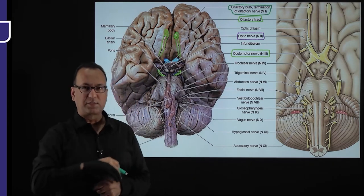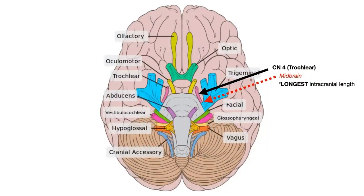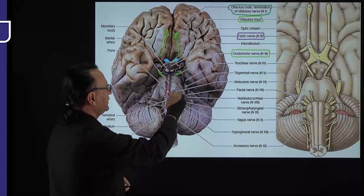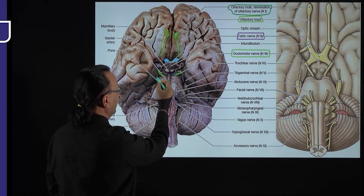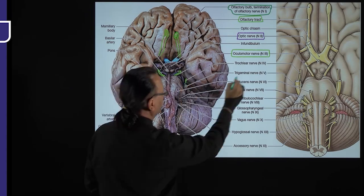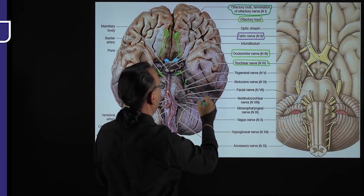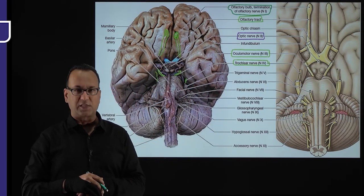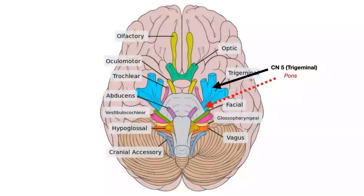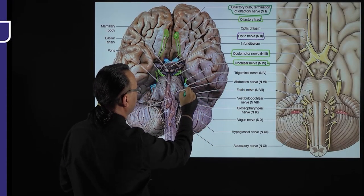Finding the trochlear nerve is difficult because it is the thinnest cranial nerve with very few axons, again coming from the midbrain. It can be seen on one side as a very thin nerve. Cranial nerves 3 and 4 come from the midbrain. The trigeminal nerve, cranial nerve 5, is the thickest cranial nerve with many axons and comes from the pons, visible on both sides.